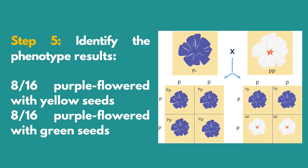And for our last step: identify the phenotype results. Based on the Punnett square, the phenotypes are 8 purple flowered with yellow seeds, and 8 purple flowered with green seeds. Therefore, the phenotypic ratio is 1:1.